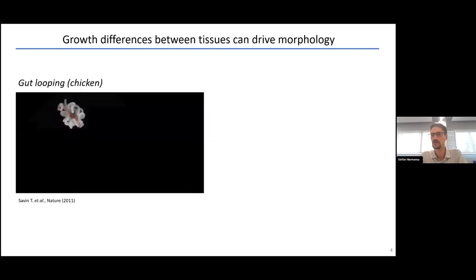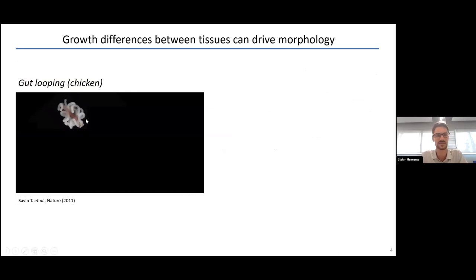Roughly a hundred years later, we have many examples that show how differences in tissue growth can actively drive morphological changes. One of the most beautiful and visual examples is the chicken gut looping.